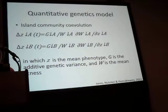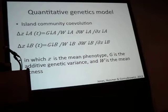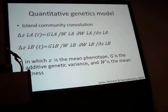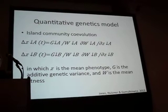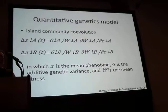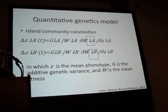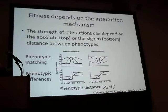We use a quantitative genetics model, which is the standard model, where we follow the change in the mean phenotype. The rate of change for species A depends on the amount of additive genetic variance divided by the mean fitness of the species, multiplied by the change in mean fitness with the change in mean phenotype. This allows us to track how the phenotype is changing over time in each of the resident species. We incorporated those two different interaction mechanisms — phenotype matching and phenotype differences — and the species' fitness within those equations.